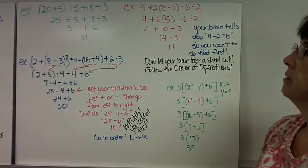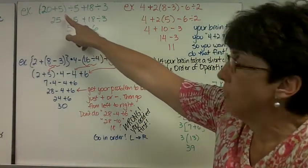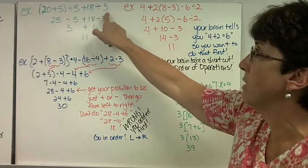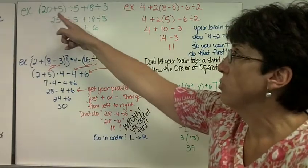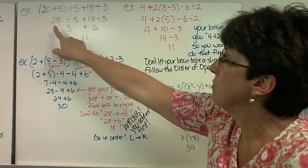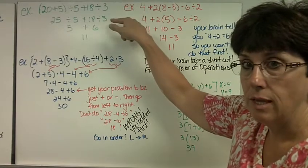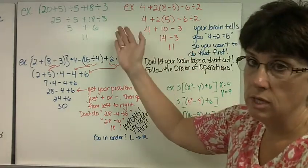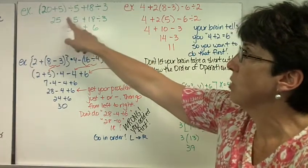Here's an example. I have the quantity of 20 plus 5 divided by 5 plus 18 divided by 3. Since we have parentheses, those are grouping symbols. That's what we do first, 20 plus 5. This first problem, I'm just going to do one step at a time.